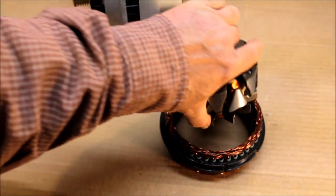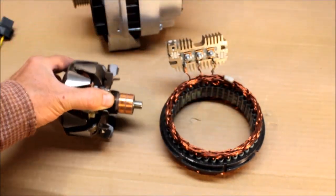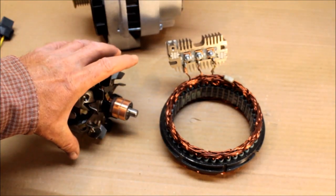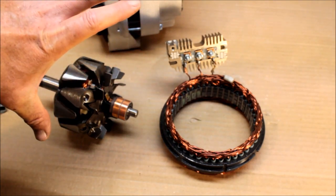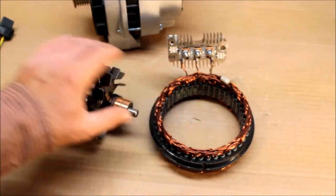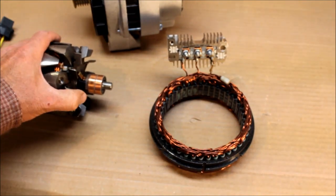When the alternator wants to put off full power, it's going to put the full 12 or 14 volts to this rotor, making it a very strong magnet. Spinning inside this stator, it's going to induce it to make a lot of power.